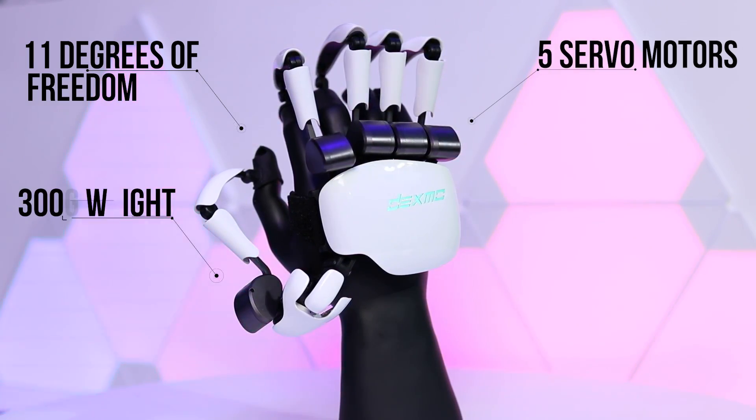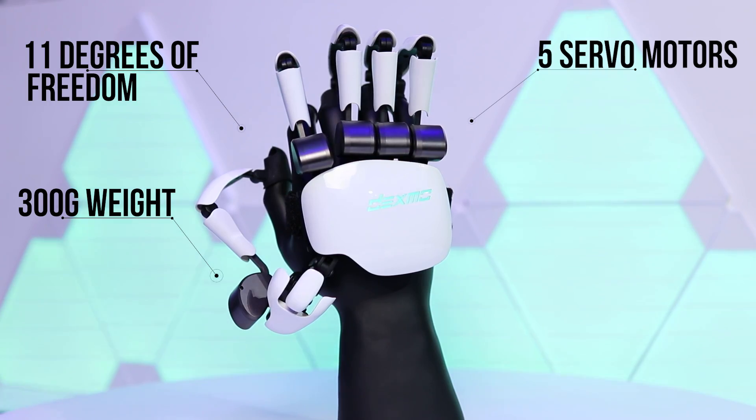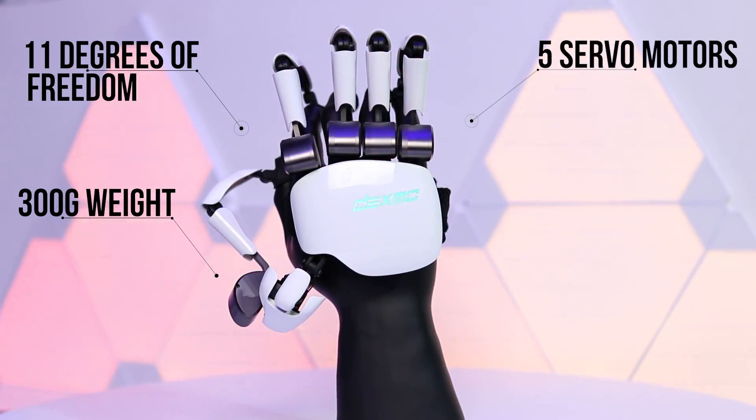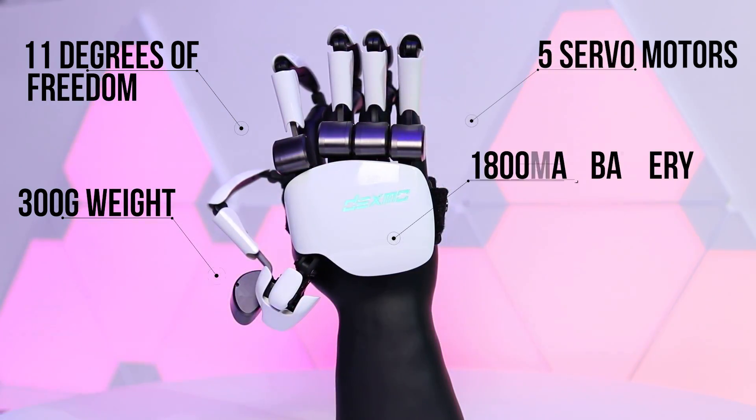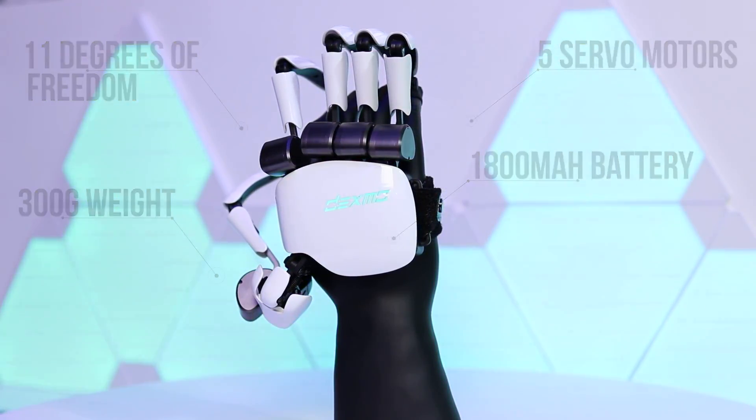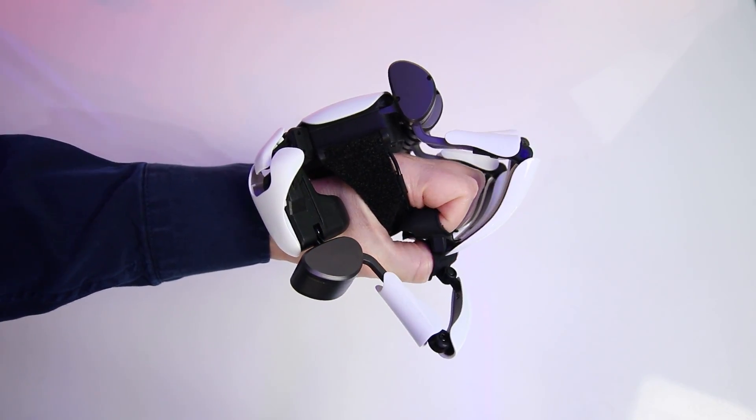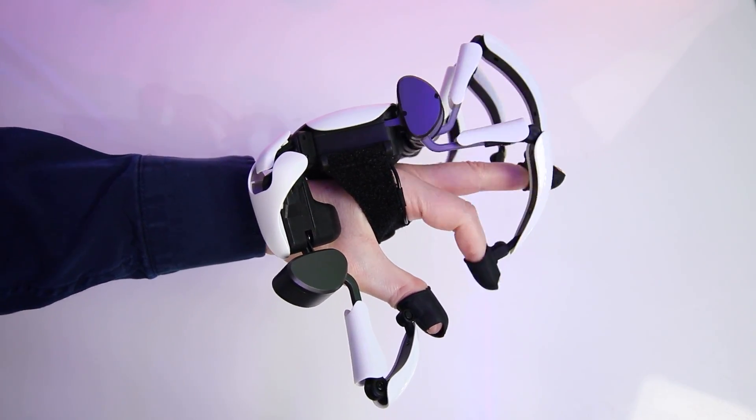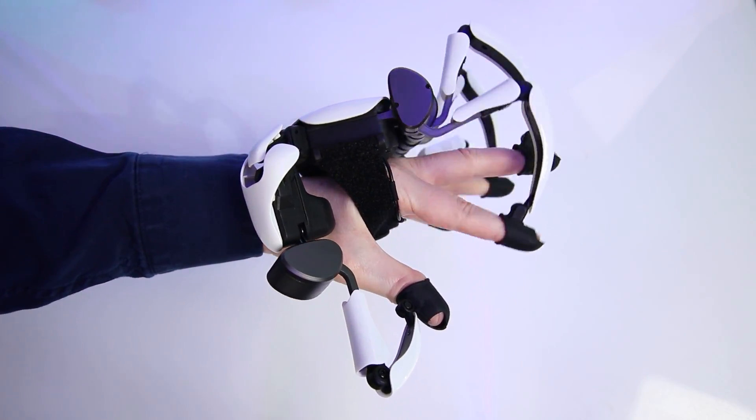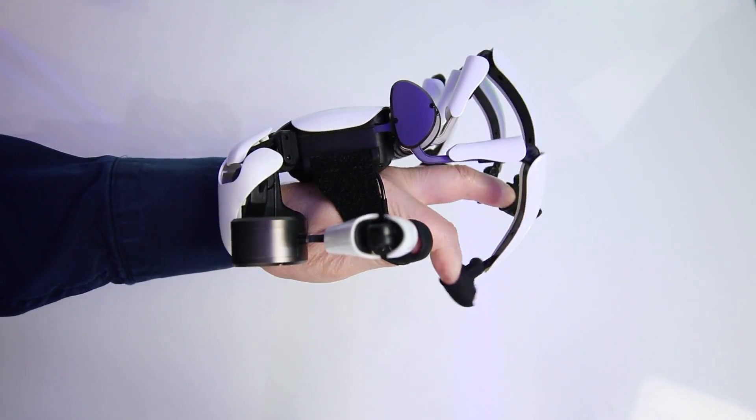The gloves are lightweight at only 300 grams each and have a memory foam pad on the inside making them surprisingly comfortable to wear. Each glove contains an 1800 milliamp hour battery which provides up to six hour battery life. Dexter have also developed their own SDK called the Dexterity Engine which provides plug and play interactive modules for use with both Unity and Unreal streamlining the implementation process for developers.